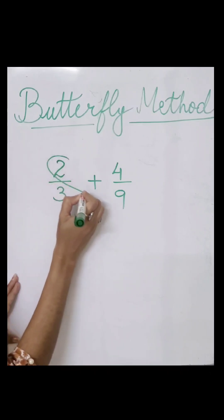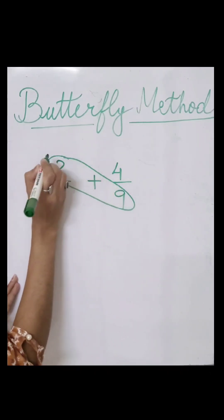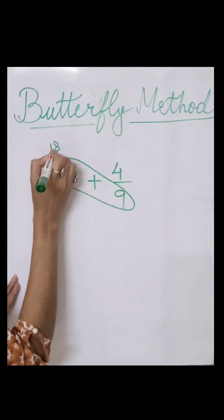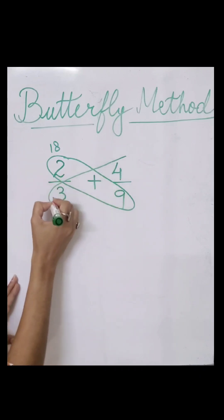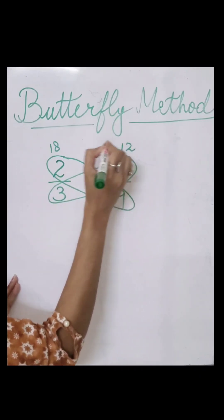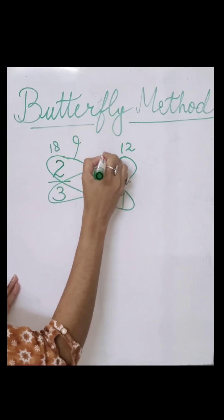We start with cross multiplying. Two times nine is 18 and four times three is 12. Now we add these two.